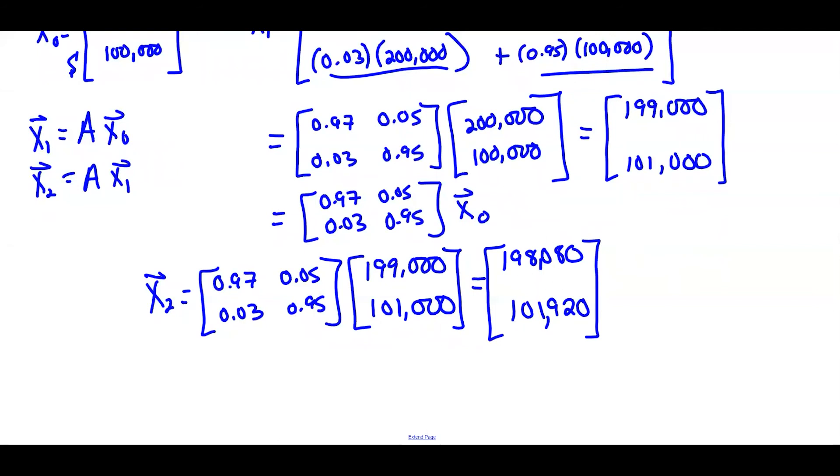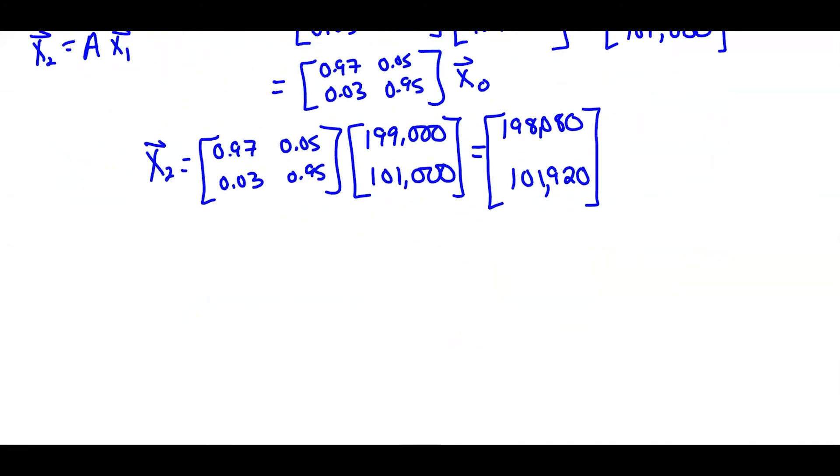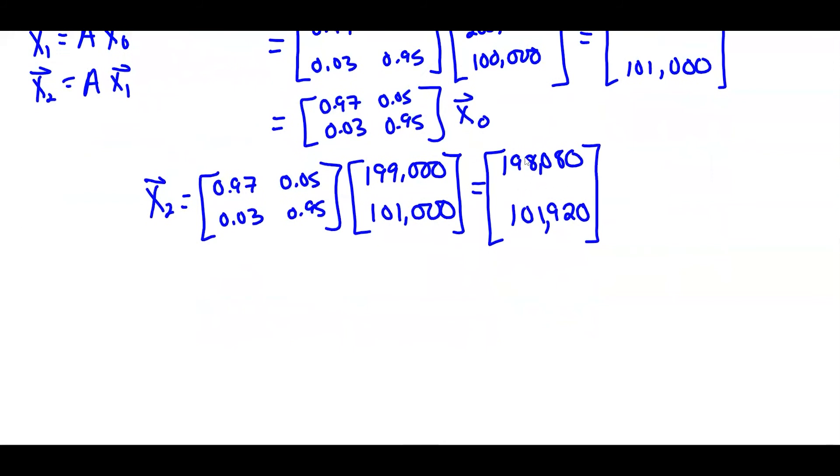So that's our population after two years. And we can see that the population in the city is going down, population in the suburbs is going up.